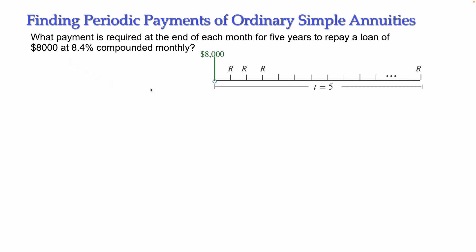Since we know the present value, we will use the present value formula and solve for R. Note everything known: present value A_N equals $8,000; nominal rate i equals 8.4%; M equals 12 because it compounds 12 times per year. The payments are also monthly, so N equals T times M: N equals 5 times 12 equals 60.